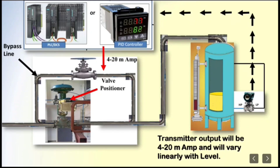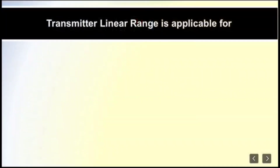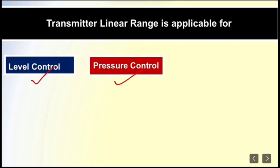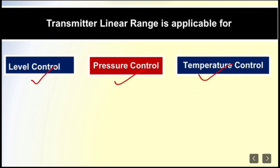It is also important to know where the transmitter linear range is applicable. It is applicable for level control, pressure control, and temperature control. For flow control, we use square root range.